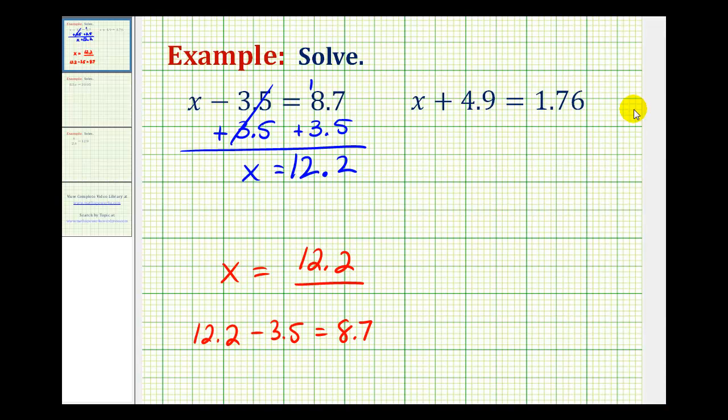Let's try a second example. Here we have x plus 4.9 equals 1.76. Again, our goal is to isolate the variable on one side of the equation. So we want to manipulate this so it's in the form of x equals some number.